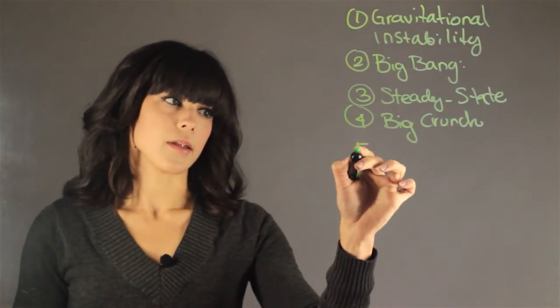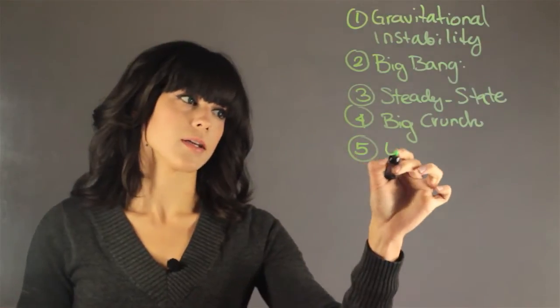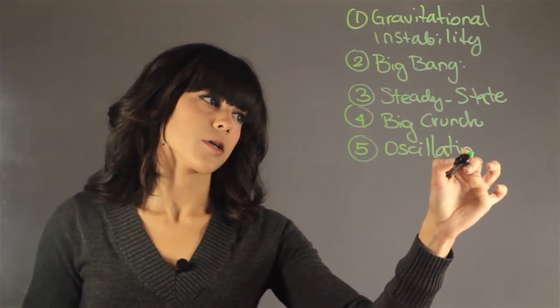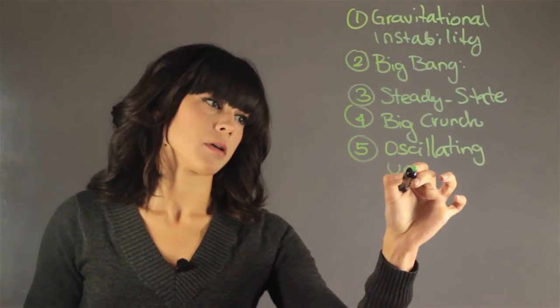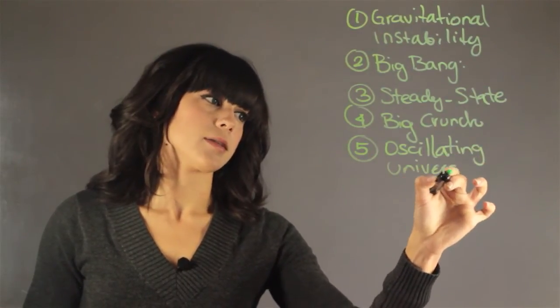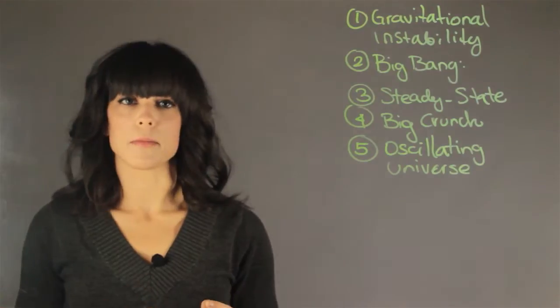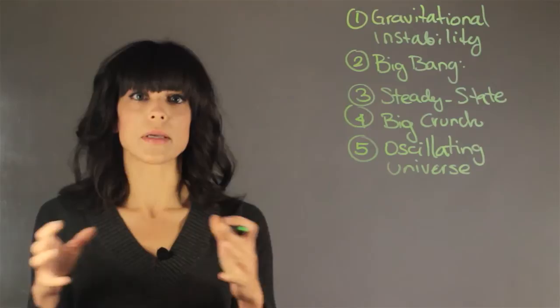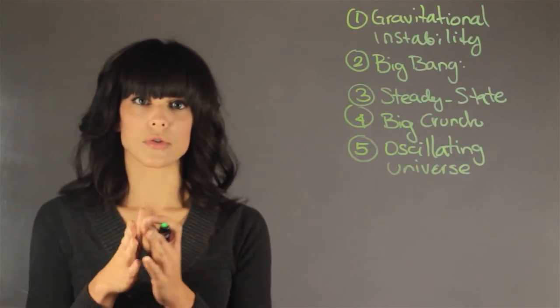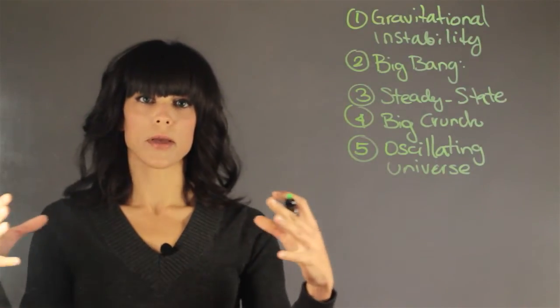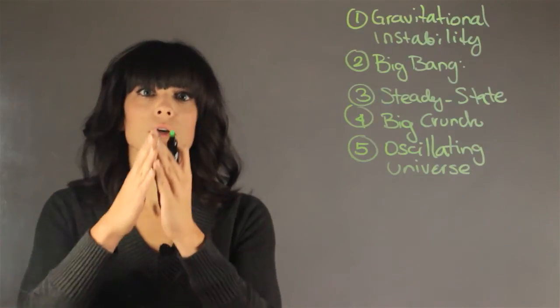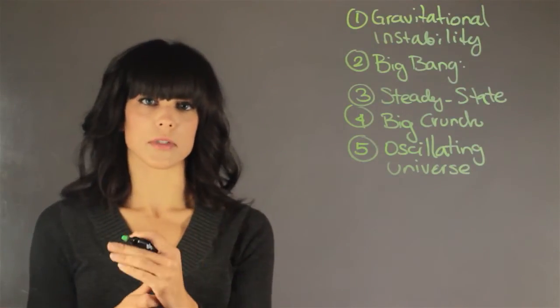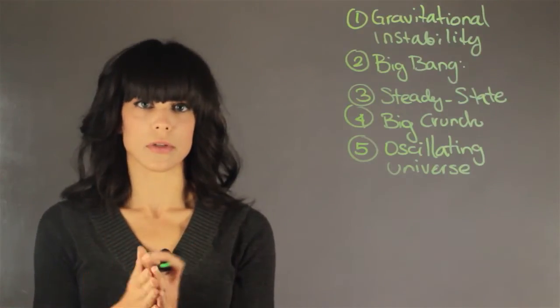And then the other theory I want to talk about is the oscillating universe, and this one is becoming quite popular. This is a mix between the Big Bang and the Big Crunch. But instead of the Big Crunch ending with a black hole, it means that it will repeat itself over and over again. So you start with a Big Bang, then you have the Big Crunch, and instead of becoming a black hole, you go back to being the Big Bang. And this can go an infinite amount of times and therefore it gets the name of an oscillating universe.